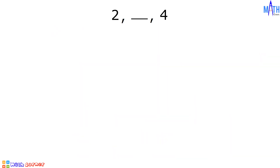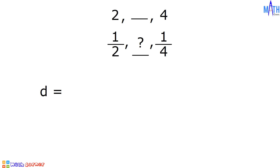Last example: what is the harmonic mean between 2 and 4? In the harmonic sequence, 2 is the first term and 4 is the third term. The reciprocal of 2 is 1/2, and the reciprocal of 4 is 1/4. The first term of the arithmetic sequence is 1/2 and the third term is 1/4. Let us determine the second term, which requires solving for the common difference.